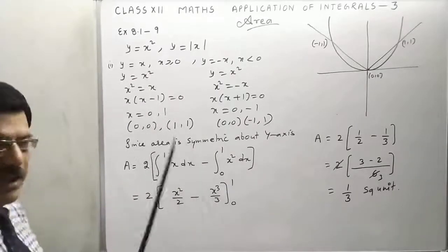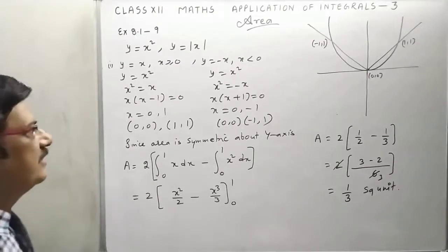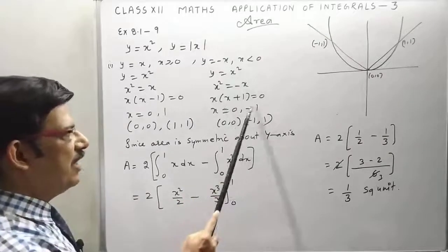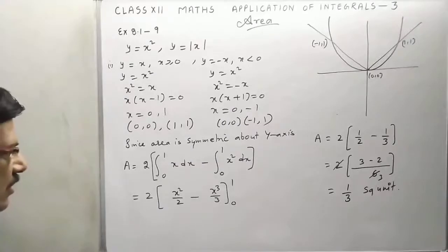So we have two points: (0,0) and (1,1). That would be point of intersections. Now for y is equal to minus x, again find point of intersection. We get (0,0) and (-1,1).